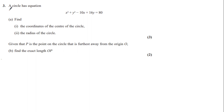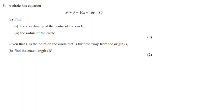Question three says a circle has the equation x squared plus y squared minus 10x plus 16y is equal to 80. Part A has two parts: the first part asks us to find the coordinates of the center of the circle, and the second part asks us to find the radius of the circle, for three marks.